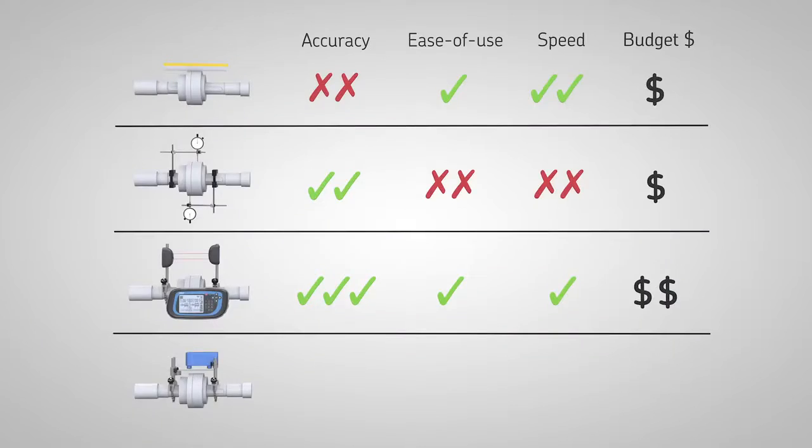The SKF TKSA 11 is designed to combine all of these benefits. It allows accurate shaft alignment and is very easy to use, fast and affordable for every budget.